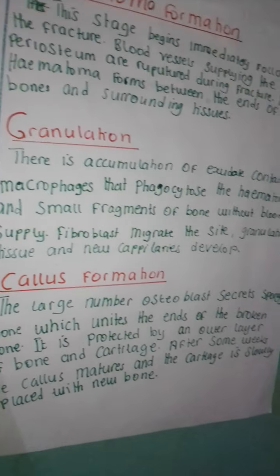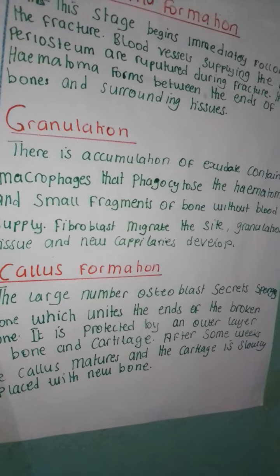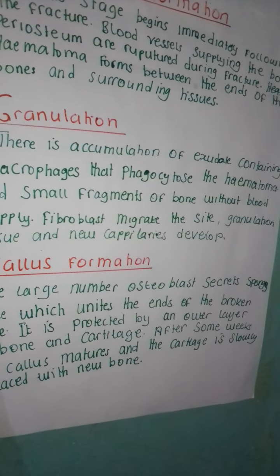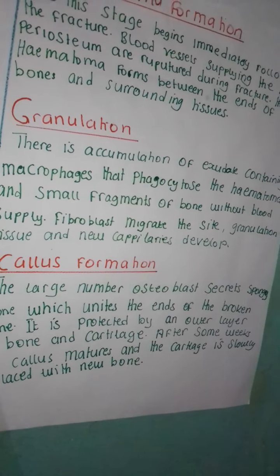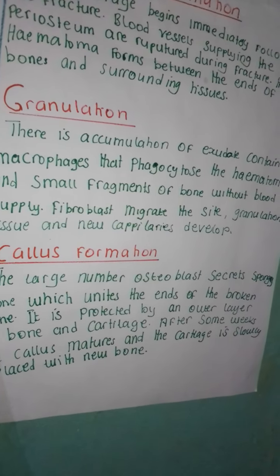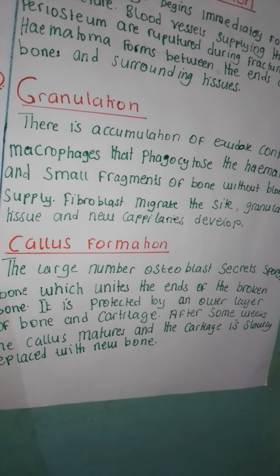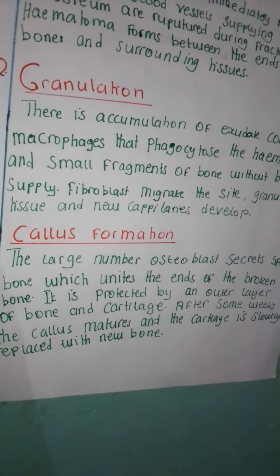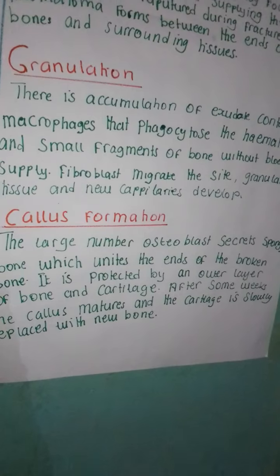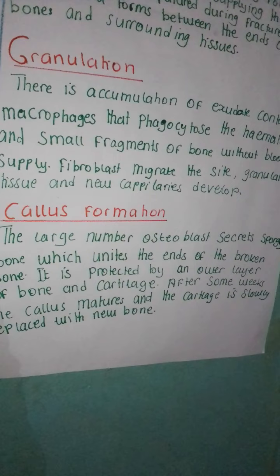Number two: granulation. This is the accumulation of exudate containing macrophages that phagocytose the hematoma and the small fragments of bone without a blood supply. Fibroblasts migrate to the site, granulation tissue forms, and new capillaries develop.